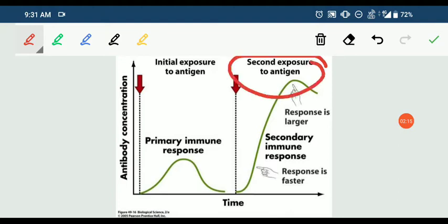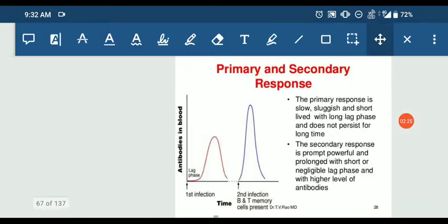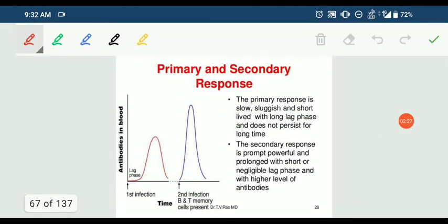When our body is exposed to the antigen or pathogen for a second time, our body can produce many antibodies very quickly. The secondary immune response is faster. You can see from this graph that the primary immune response is slow, sluggish, and does not persist for a very long time. But the secondary immune response is very powerful, it is prolonged, remains a long time, and has higher levels of antibodies present.